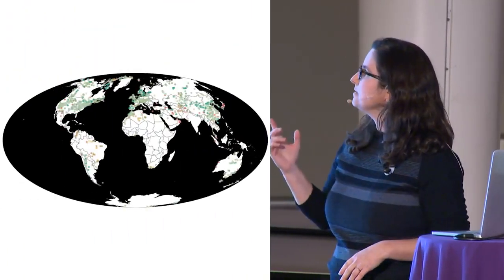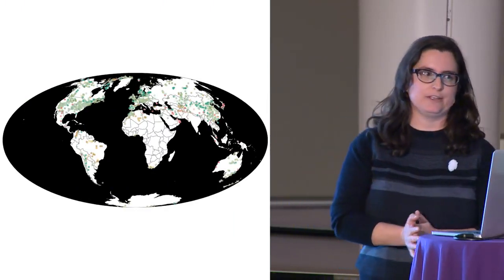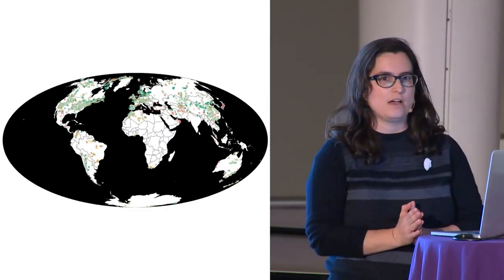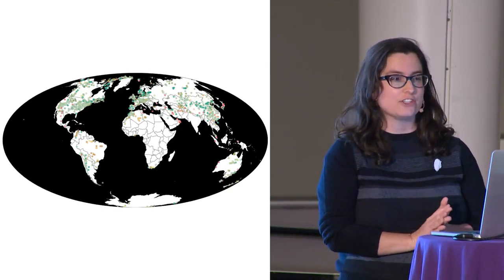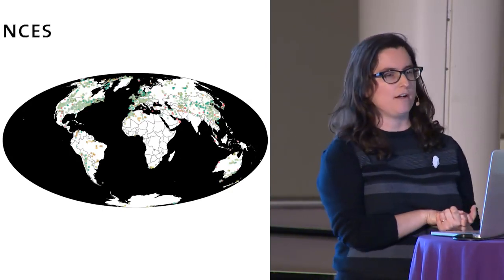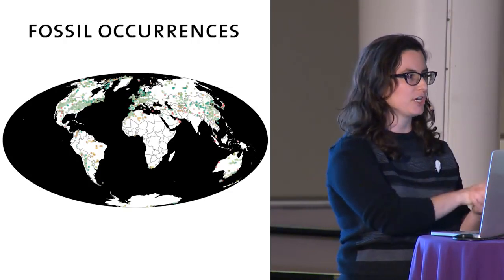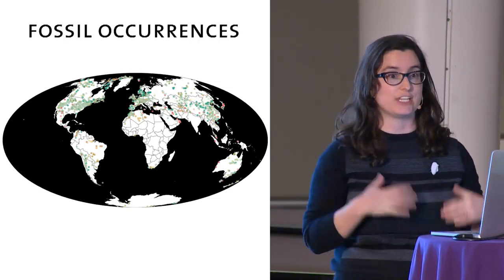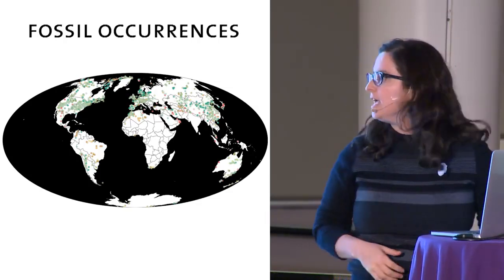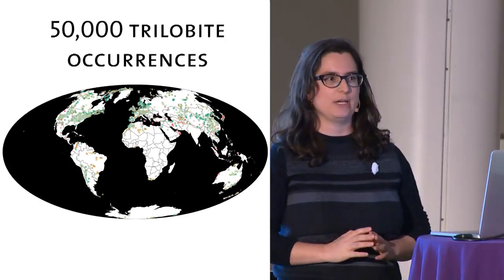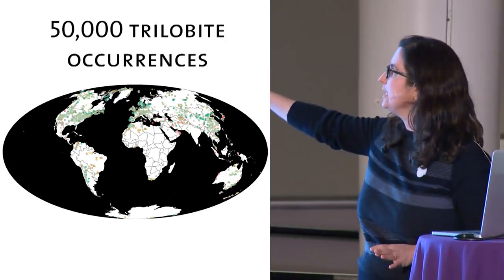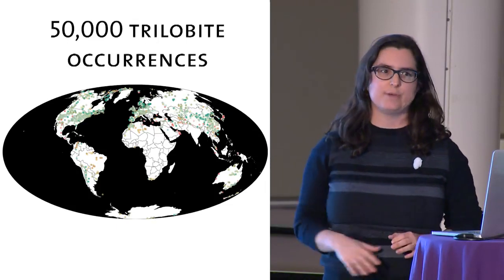So this is a dataset that I downloaded from the paleobiology database. This is an international community effort to take fossil occurrences from field notes and from the literature and put them into a database that we can use to answer really broad questions. And so far about 50,000 trilobite occurrences have been entered. And that's what's shown here. They're color-coded by their age.